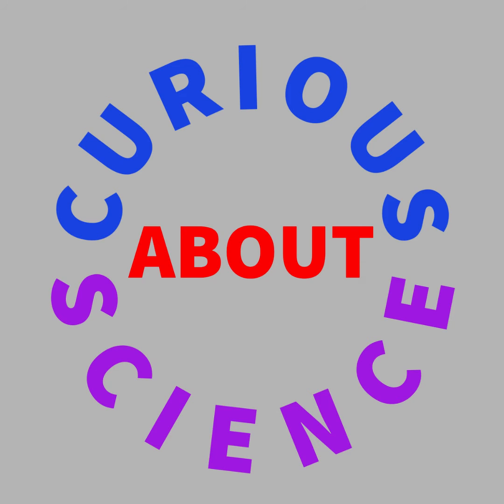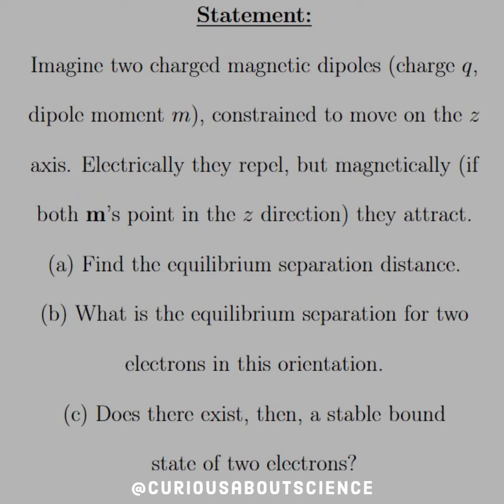All right, so our next one here is asking us to imagine two charged magnetic dipoles, charge Q dipole moment M, constrained to move on the z-axis.